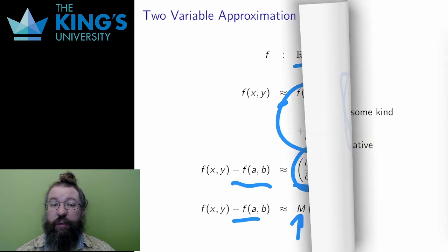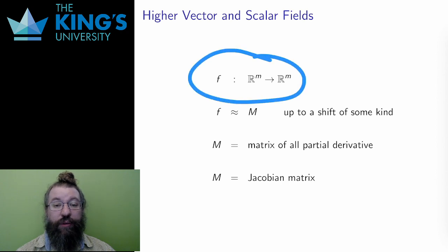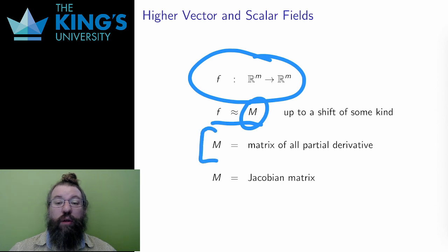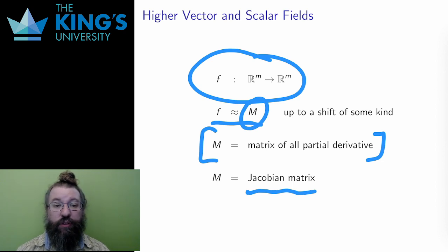This idea generalizes to higher dimensions and to vector fields as well — those functions with multiple inputs and multiple outputs, which we will deal with later in the course. All such functions can be approximated by a linear function, and that linear function, like all linear functions, is described by a matrix. The matrix that does this will have all of the partial derivatives in it, and it is called the Jacobian matrix for the function. This is the last kind of derivative extension: the derivative as a linear approximation expressed by the matrix of partial derivatives.